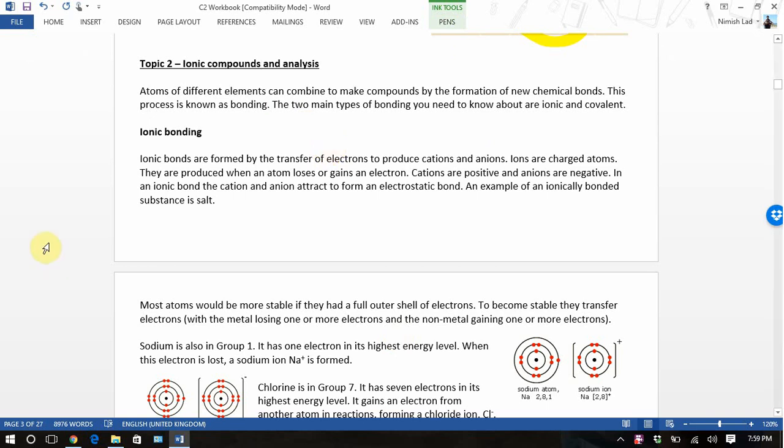Atoms of different elements can combine to make compounds by the formation of new chemical bonds. Ionic bonds are formed by the transfer of electrons. That's such a key phrase, the transfer of electrons. They produce simple cations and anions. Ions are charged atoms produced when an atom loses or gains electrons. Cations are positive and anions are negative. An ionic bond, the cation and anion are attracted to form an electrostatic bond. An example of an ionic compound is salt.